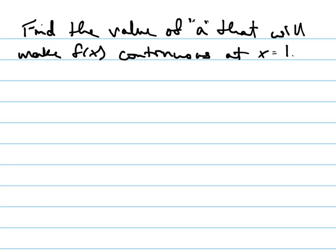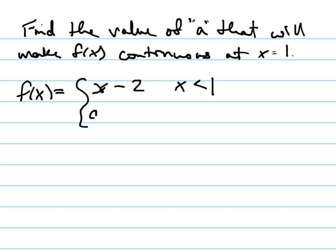Find the value of A that will make f of x continuous at x equals 1. f of x is piecewise: it equals x minus 2 whenever x is less than 1, and it equals A times x minus 3 squared when x is greater than or equal to 1.